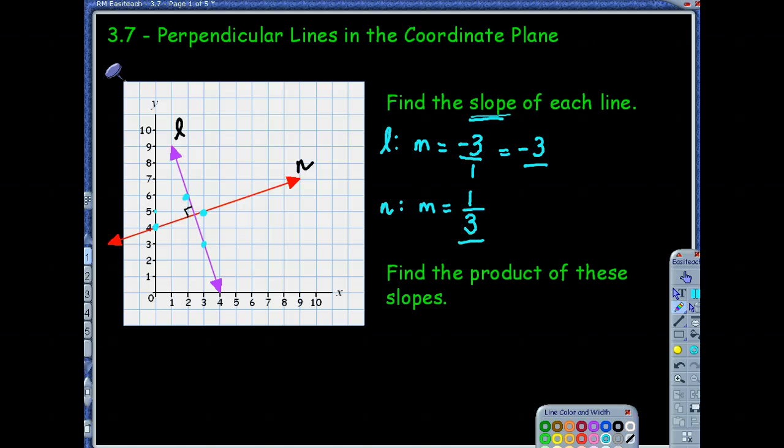Obviously they're not the same, and you might be noticing something. I'm going to have you do one more thing before we talk about what we're noticing. Let's find the product of these slopes. Now, what does it mean to find the product? Product would be to multiply them. So let's multiply these slopes. We're going to take negative three and multiply by one-third. That product would be a negative one.